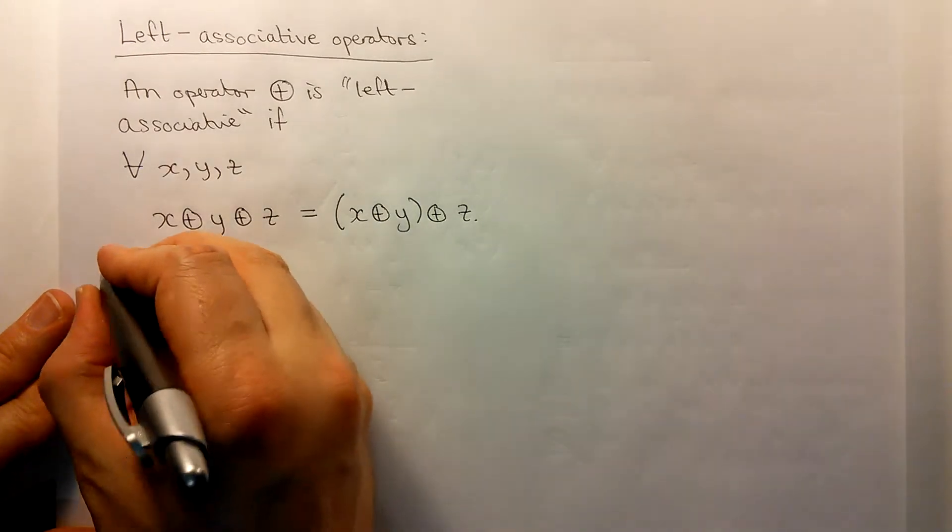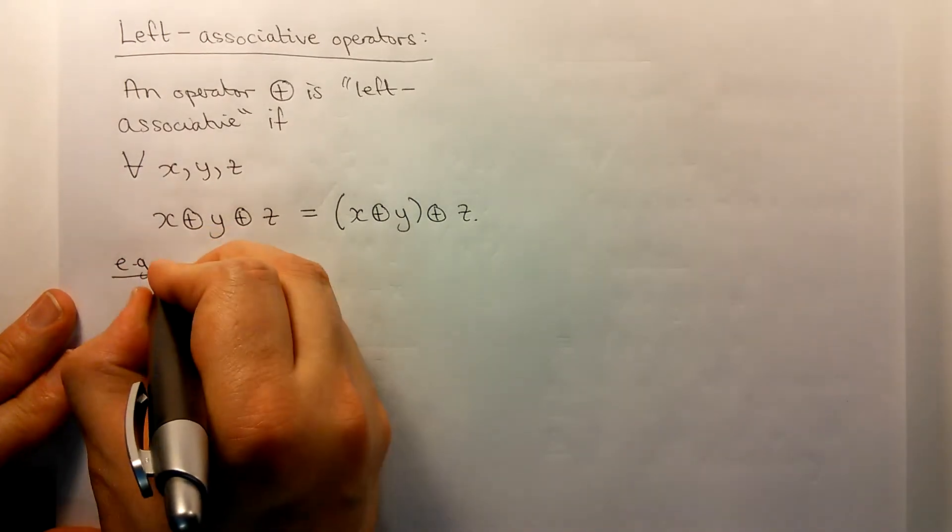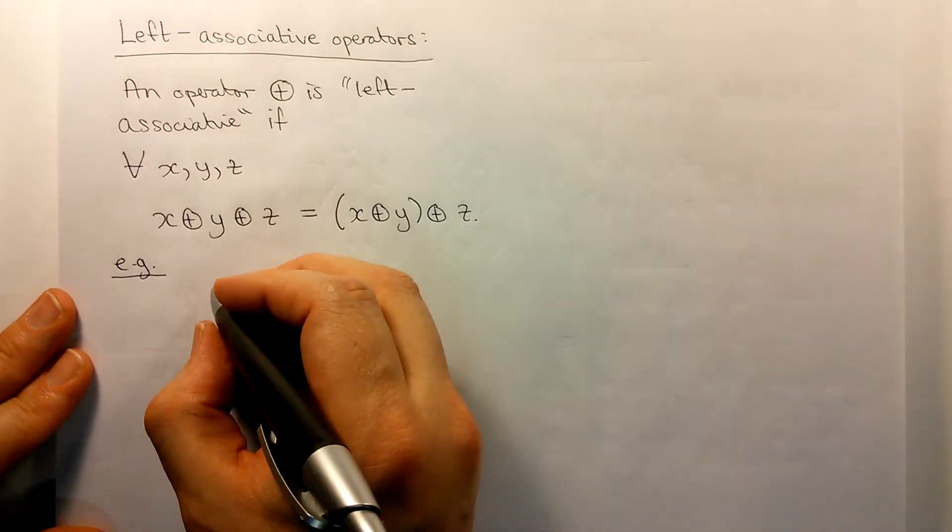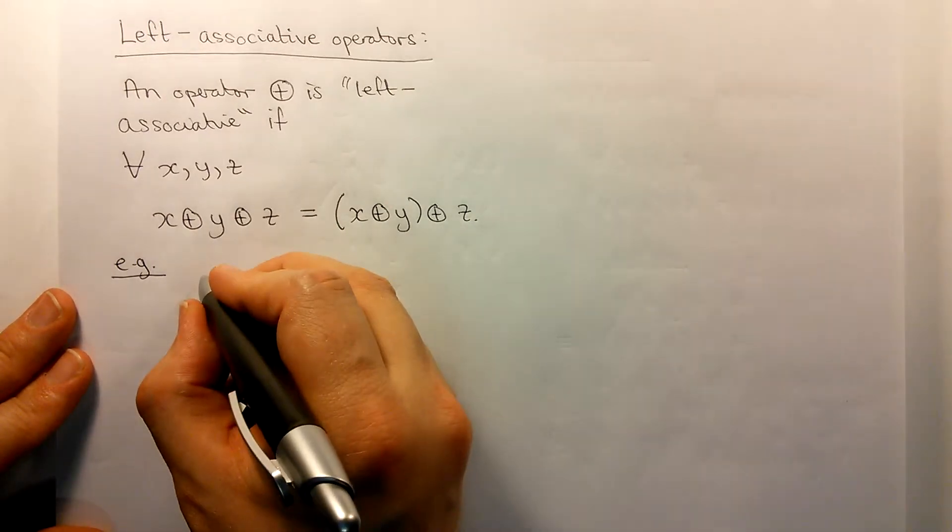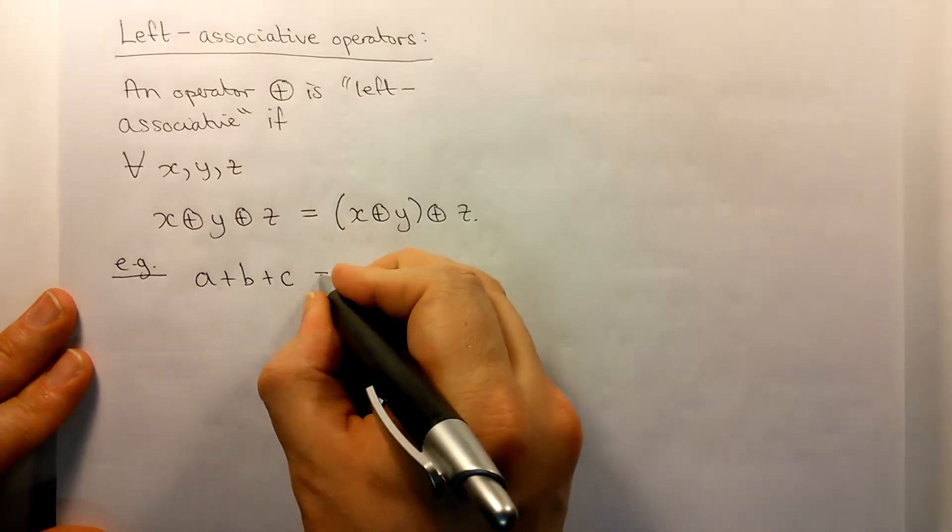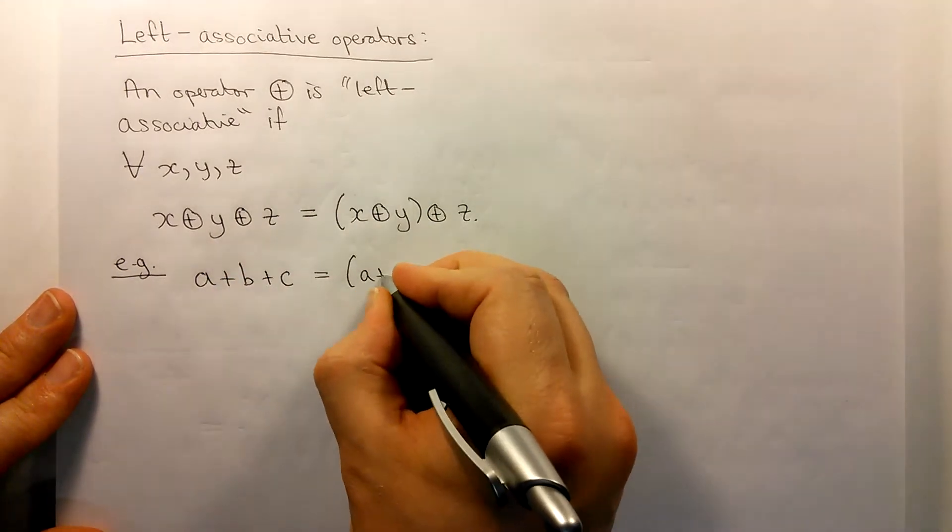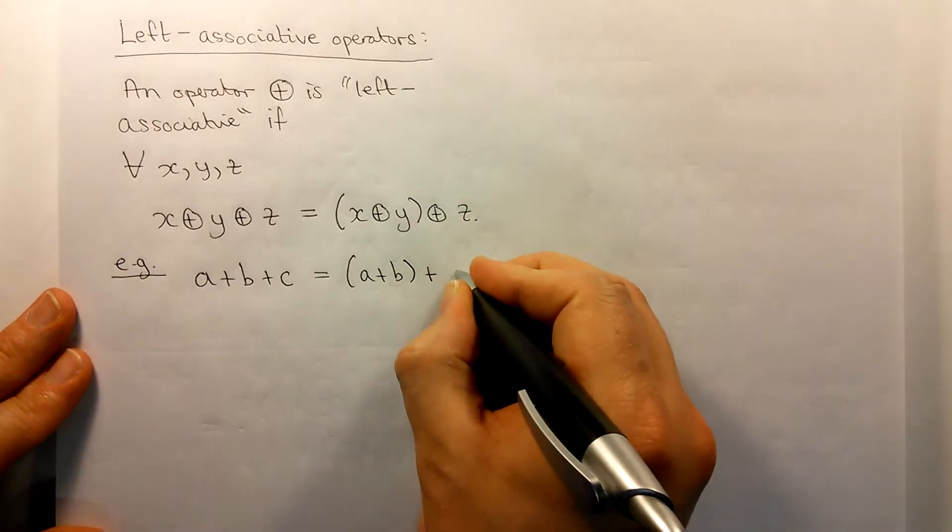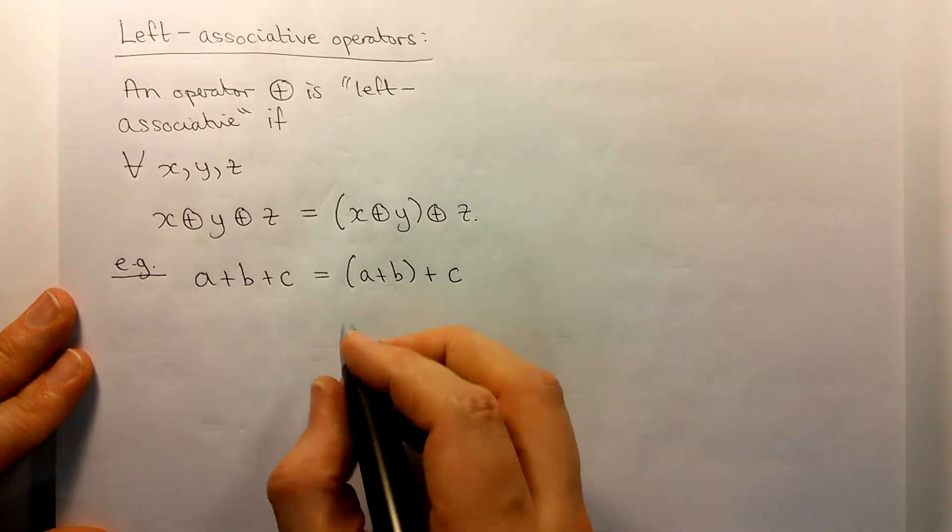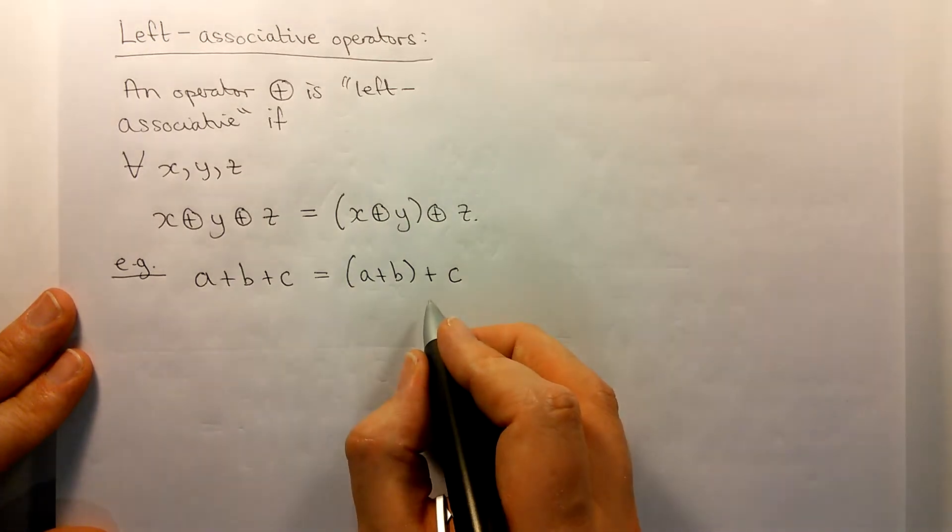So let's just give some examples to make this more concrete. In ordinary mathematics, addition and multiplication are left associative. So in ordinary mathematics if we write down a plus b plus c, then that's equivalent to doing the left hand operation first. Now actually in mathematics it's also equivalent to doing the right hand one first.